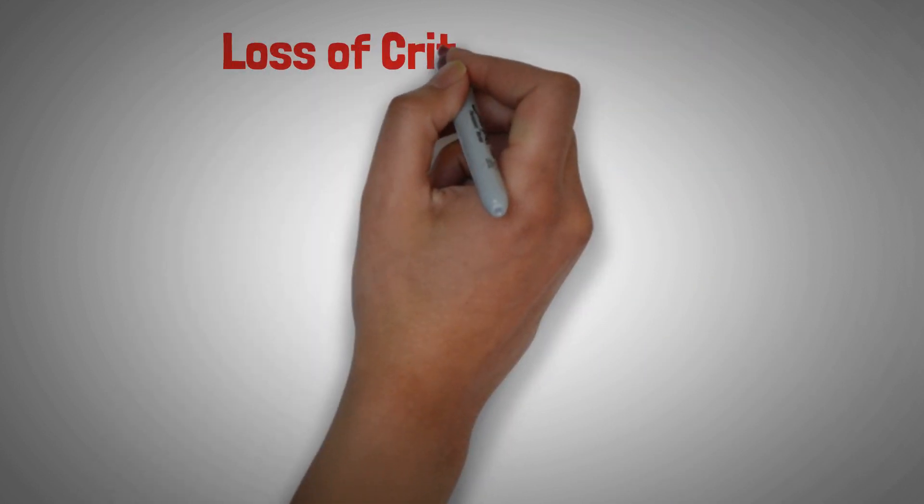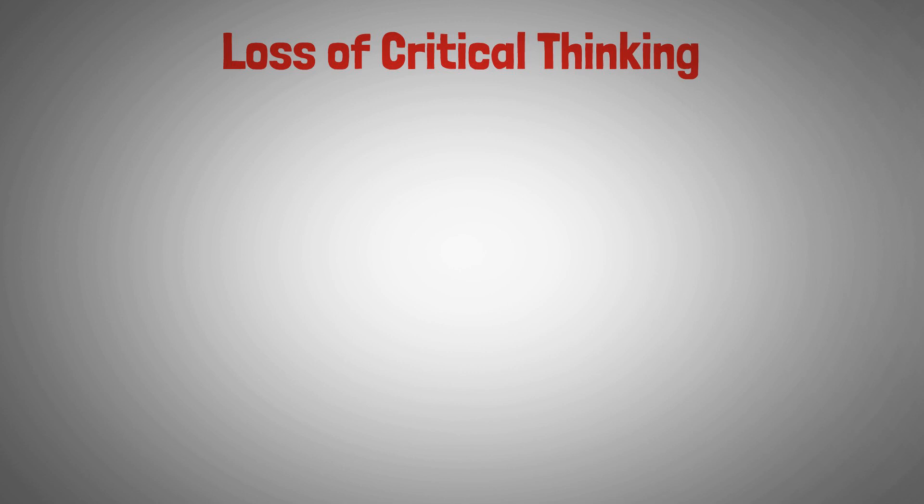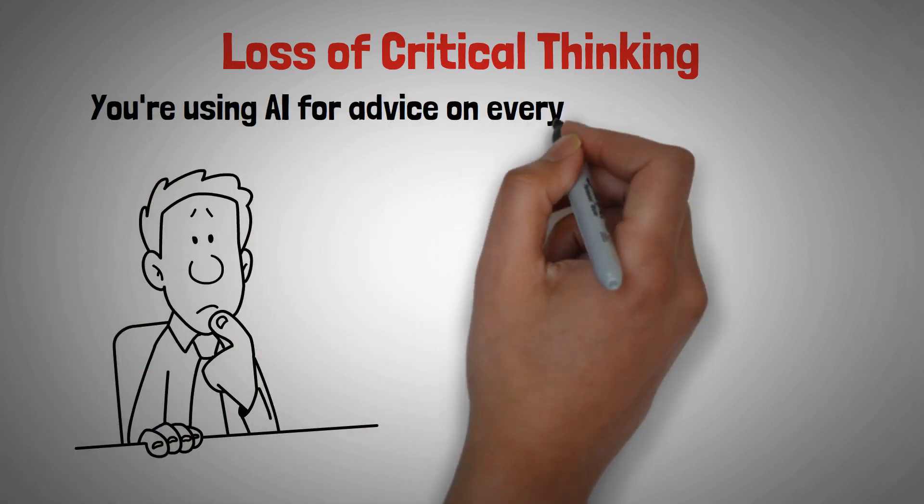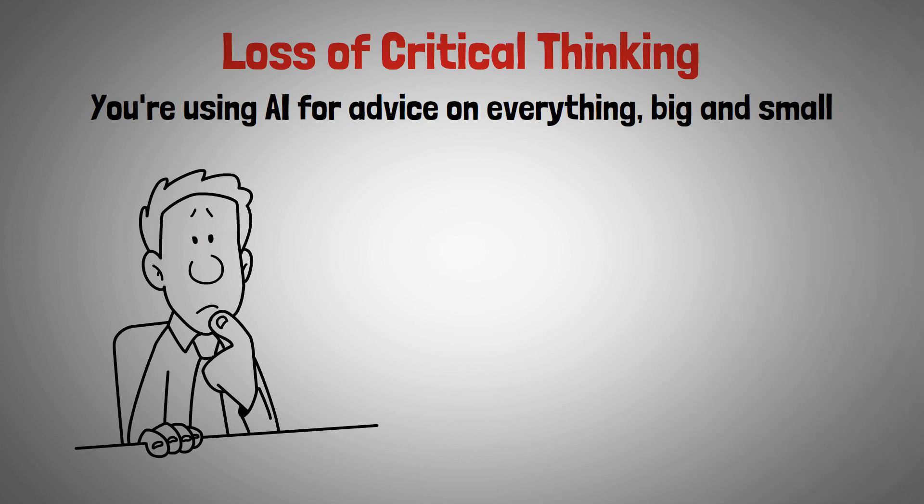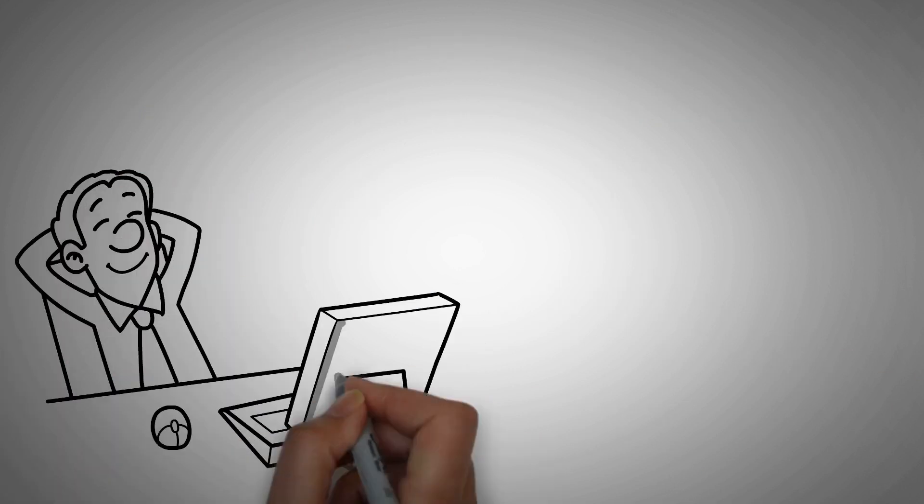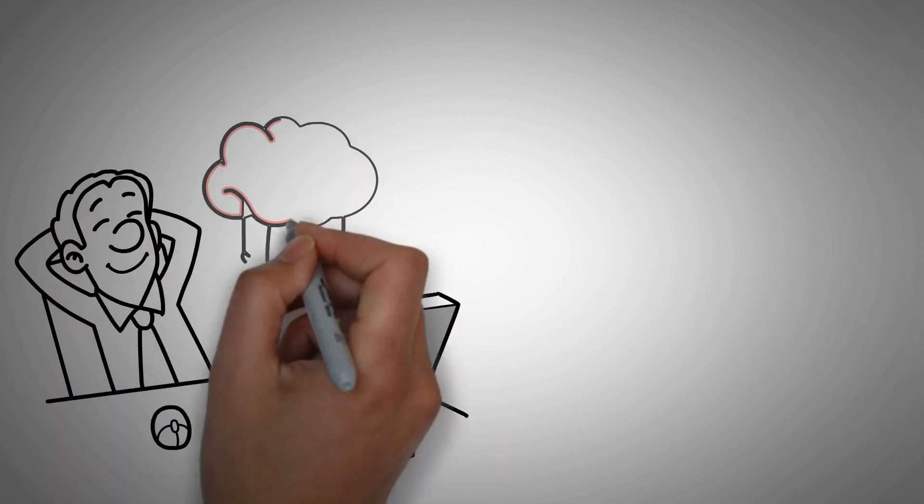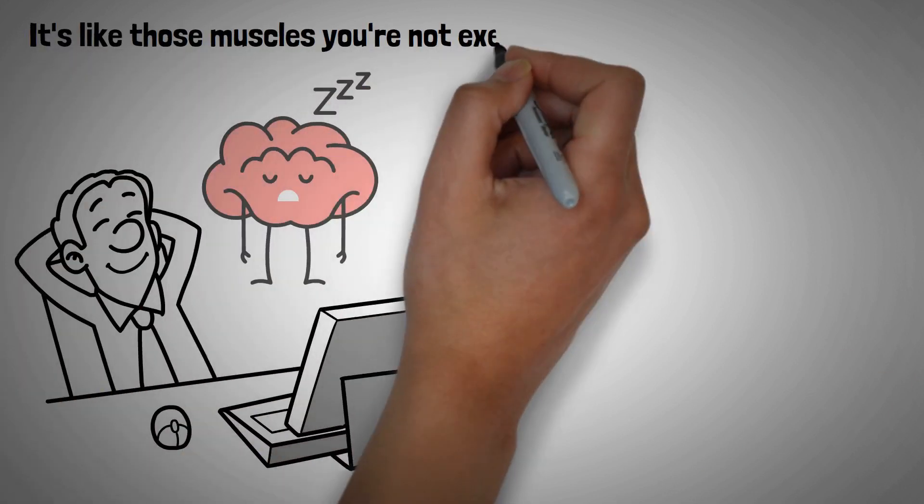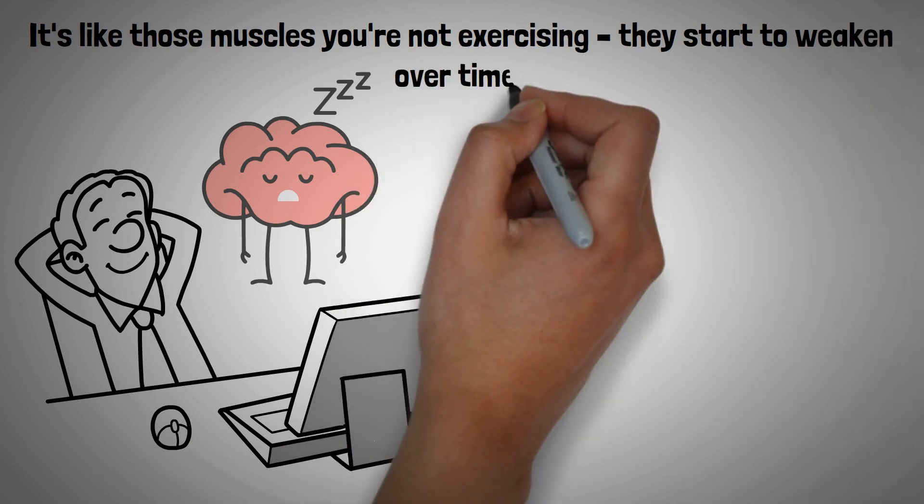Number one, loss of critical thinking. Think about it this way. You're using AI for advice on everything big and small. Now this seems super convenient at first, right? But here's the catch. When you get used to having answers served up on a silver platter, after a while your brain will start getting a bit lazy. It's like those muscles you're not exercising. They start to weaken over time.